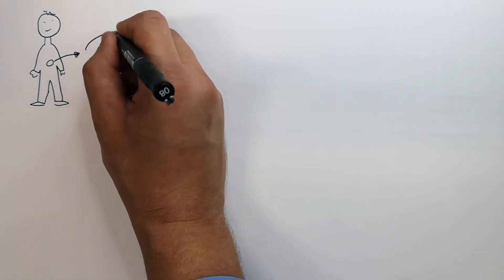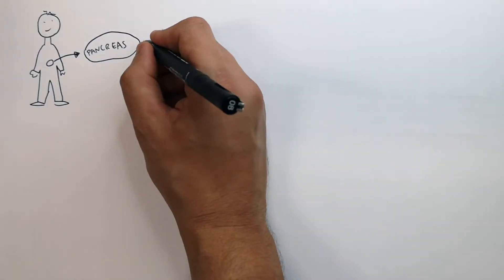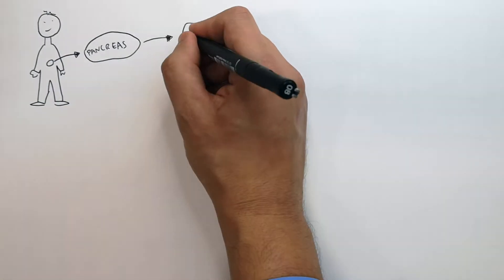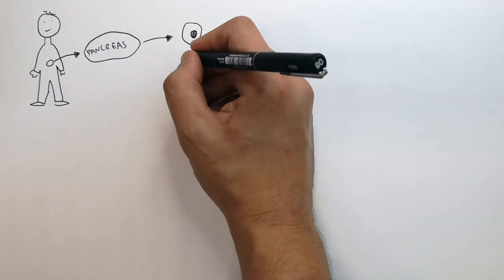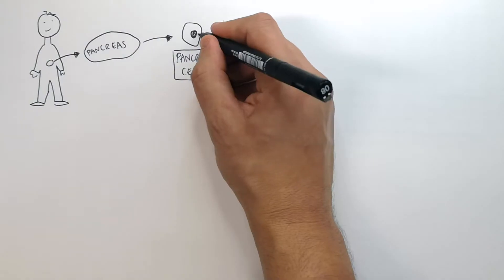We firstly remove a pancreatic cell from the pancreas. This is a pancreatic cell.